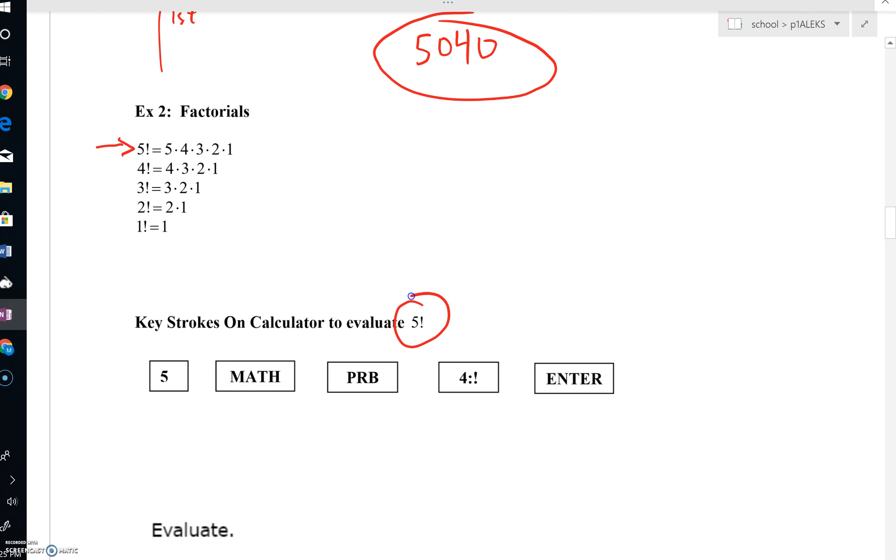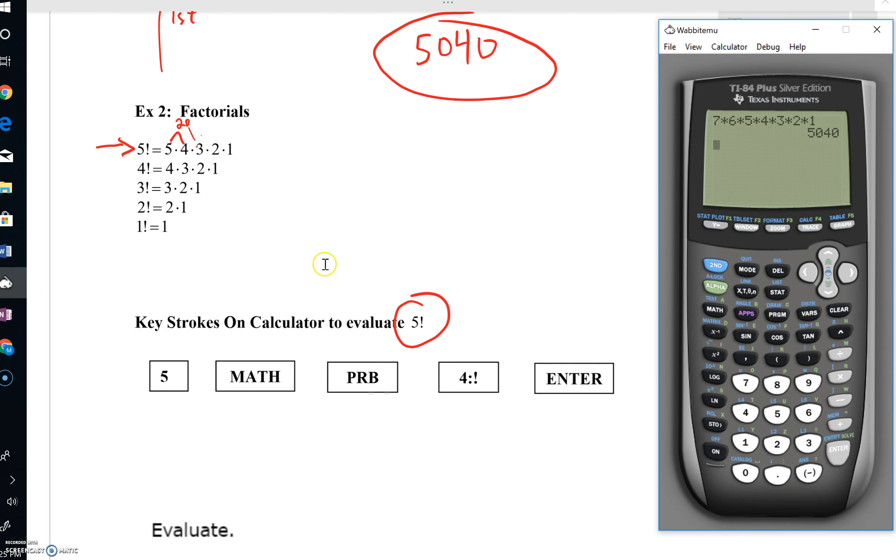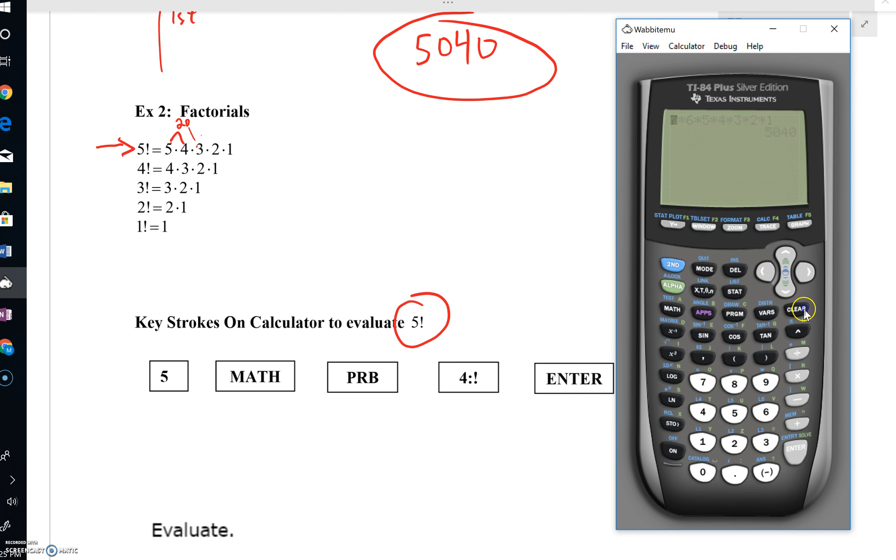Let's just say that you wanted to work out five factorial. By the way, we can multiply this. Five times four is 20, 20 times three would be 60, and 60 times two is 120. The question is, does your calculator evaluate factorials? It does.